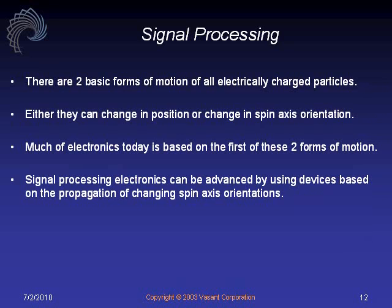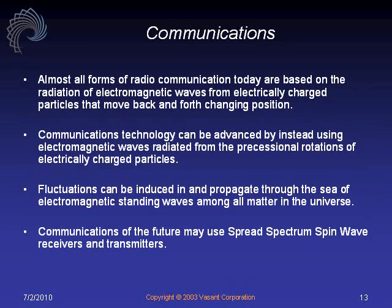There are two basic forms of motion for all electrically charged particles. Most of our technology today is based on rectilinear motion of charged particles. What I'm saying is that whether it's an uncompensated spin or compensated spin, you can still develop technology that utilizes changing spin axis orientations and the electromagnetic waves radiated out to and from them — and base technology on manipulating that to do lots of useful things. Signal processing is one application, communications is another.